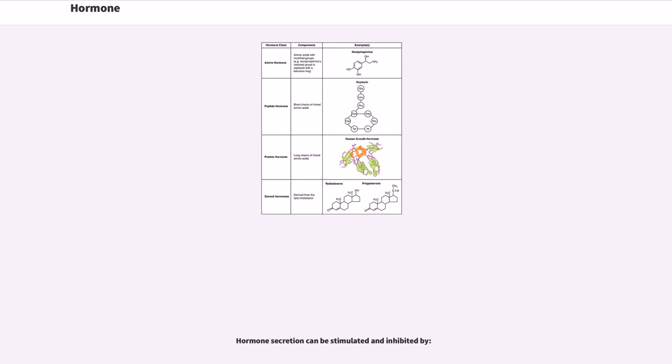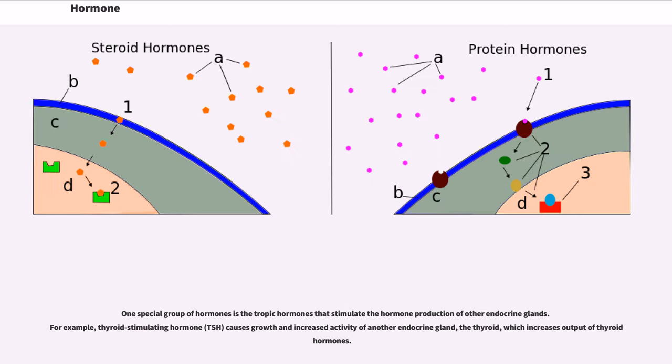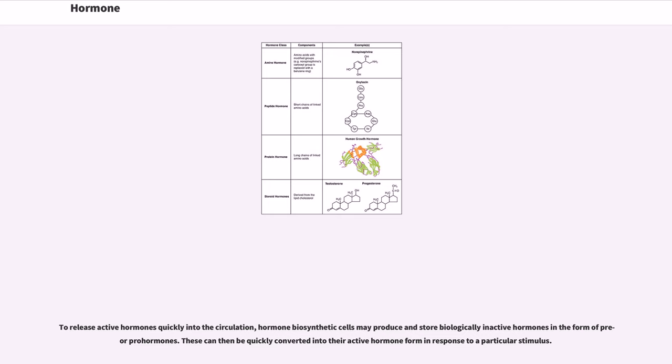Hormone secretion can be stimulated and inhibited by one special group of hormones, the tropic hormones that stimulate the hormone production of other endocrine glands. For example, thyroid-stimulating hormone, TSH, causes growth and increased activity of another endocrine gland, the thyroid, which increases output of thyroid hormones. To release active hormones quickly into the circulation, hormone biosynthetic cells may produce and store biologically inactive hormones in the form of pre- or pro-hormones. These can then be quickly converted into their active hormone form in response to a particular stimulus.